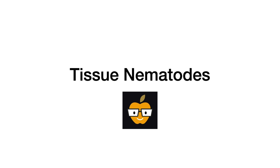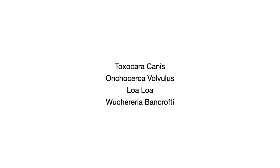In this video, we will continue the conversation about nematodes and specifically focus on the four tissue nematodes: Toxocara canis, Onchocerca volvulus, Loa loa, and Wuchereria bancrofti. When it comes to nematodes, I want to simplify everything into buzzwords, associations, risk factors, and mnemonics where appropriate to help you identify these on test day. On tests, most of your brain space is going to be occupied by bacteria and viruses, so we really want to simplify other pathogens like nematodes.